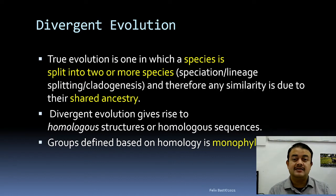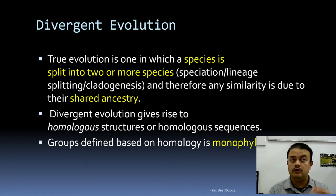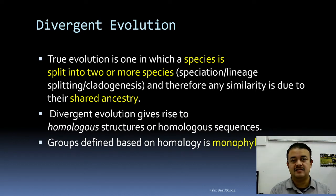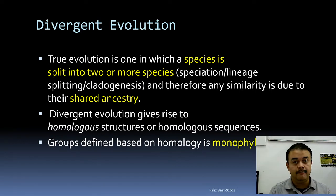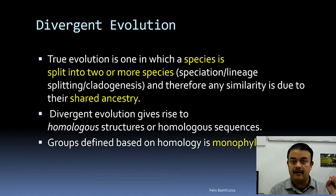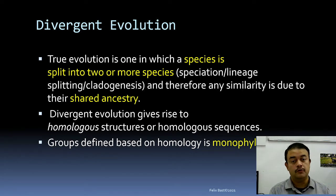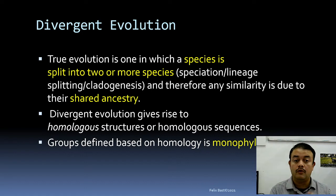Divergent evolution gives rise to homologous structures or sequences. Groups defined based on homology are known as monophyletic groups — a term that comes up repeatedly in phylogenetics and modern systematics, which is based on cladistic systematics. In modern systematics, only monophyletic groups are formally named. Monophyletic means all offspring derive from one common ancestor, making these natural groups rather than artificial ones.